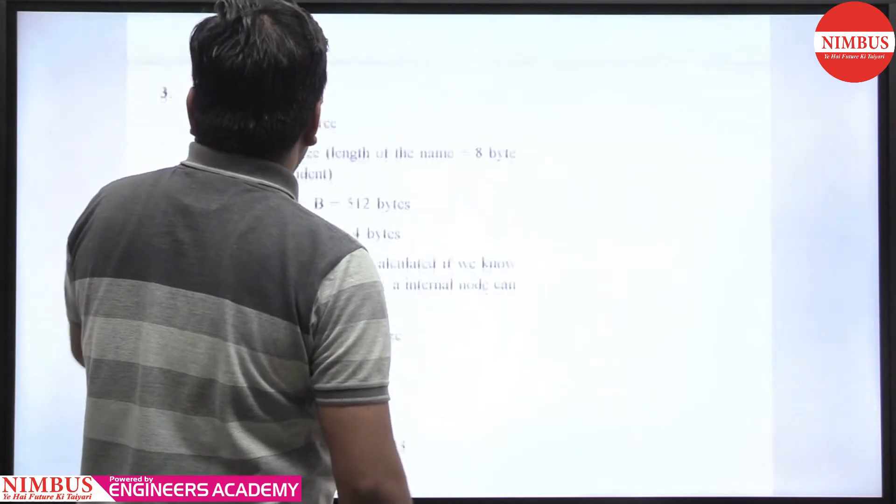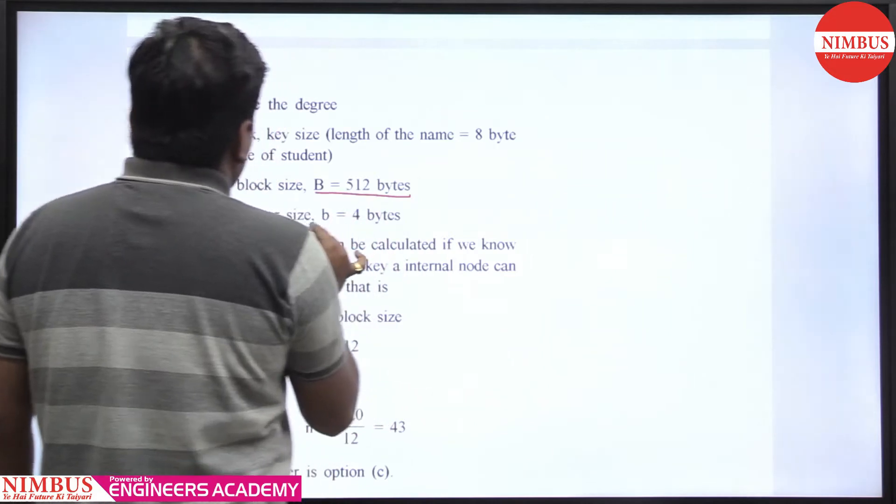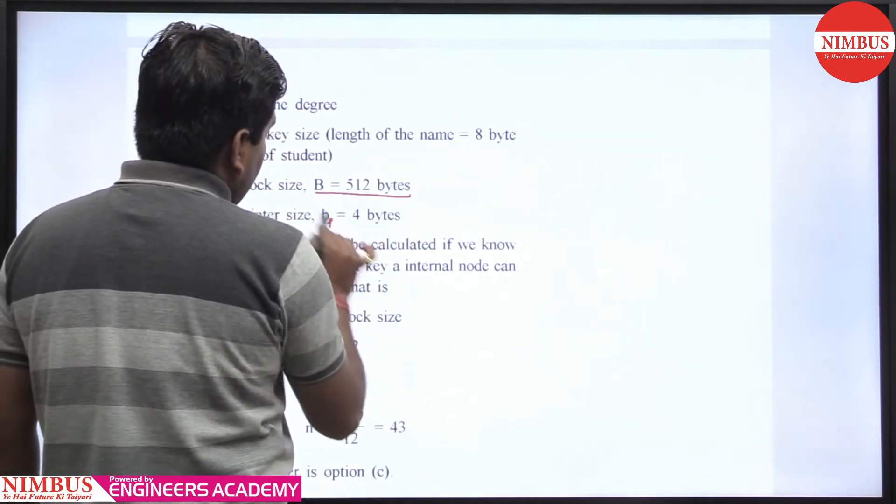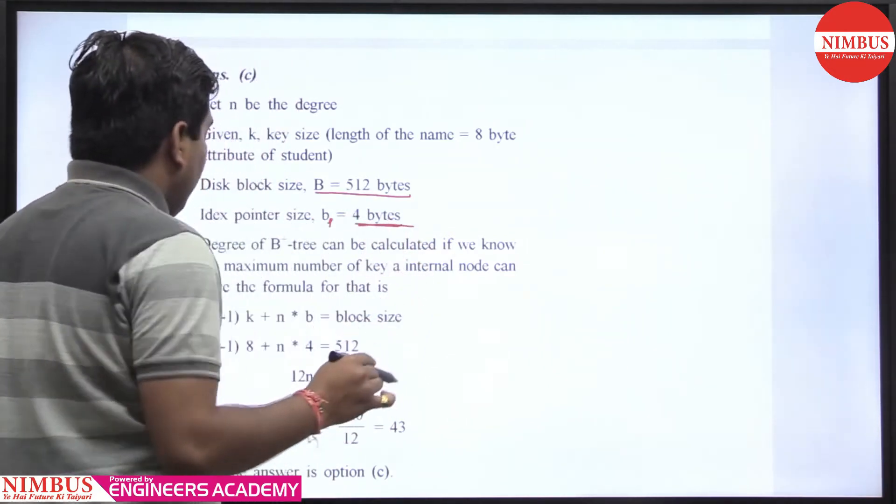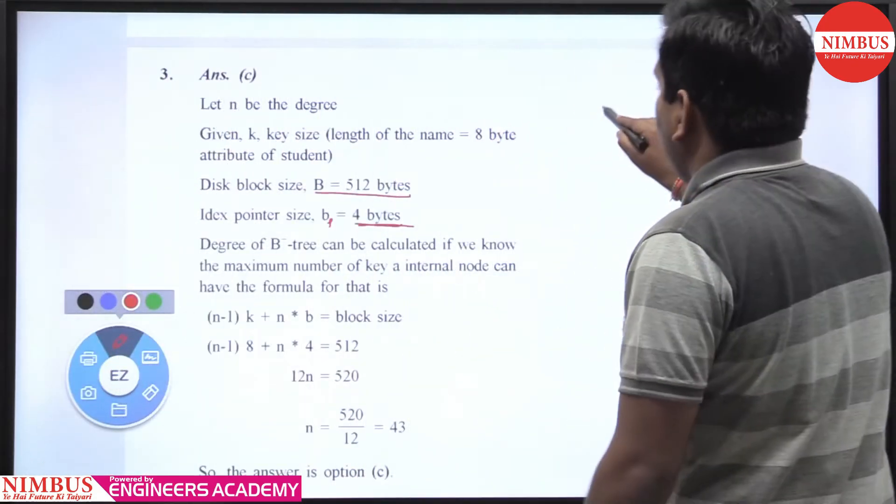Let the degree be n. Block size is given as 512 bytes, and block pointer size Bp is 4 bytes. For a non-leaf or internal node, n block pointers plus n minus 1 keys must be less than or equal to the block size.